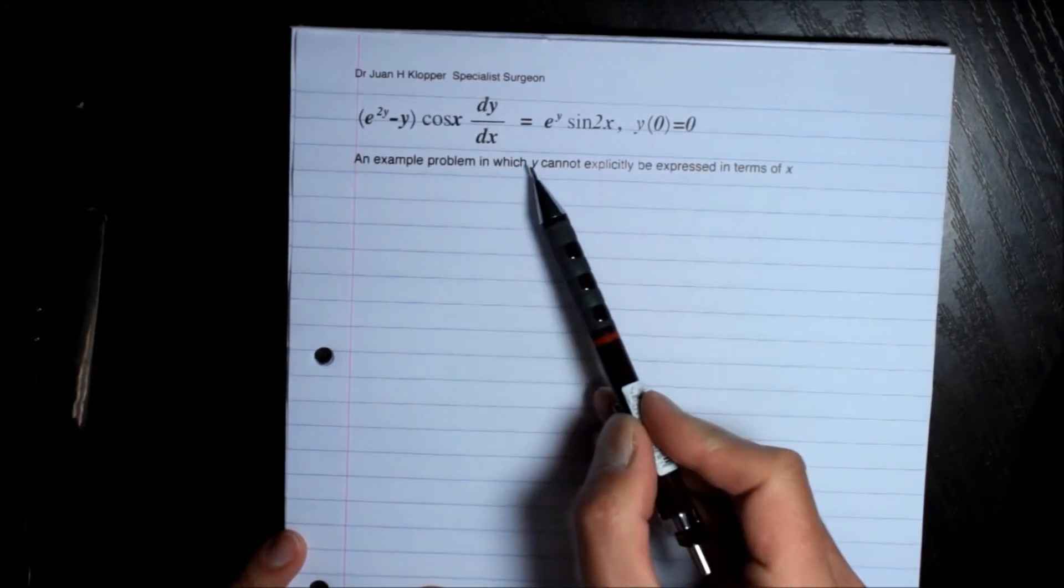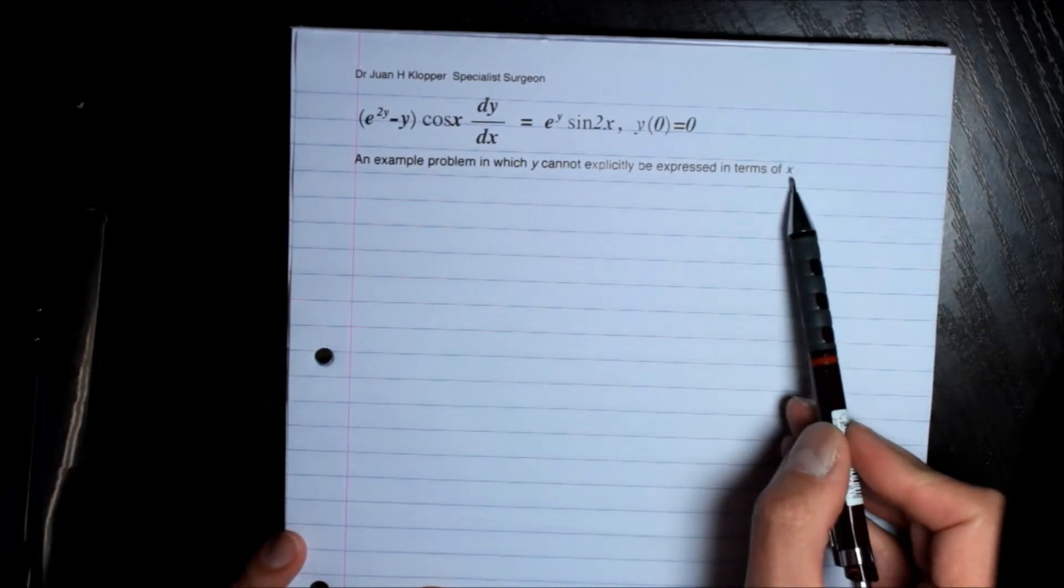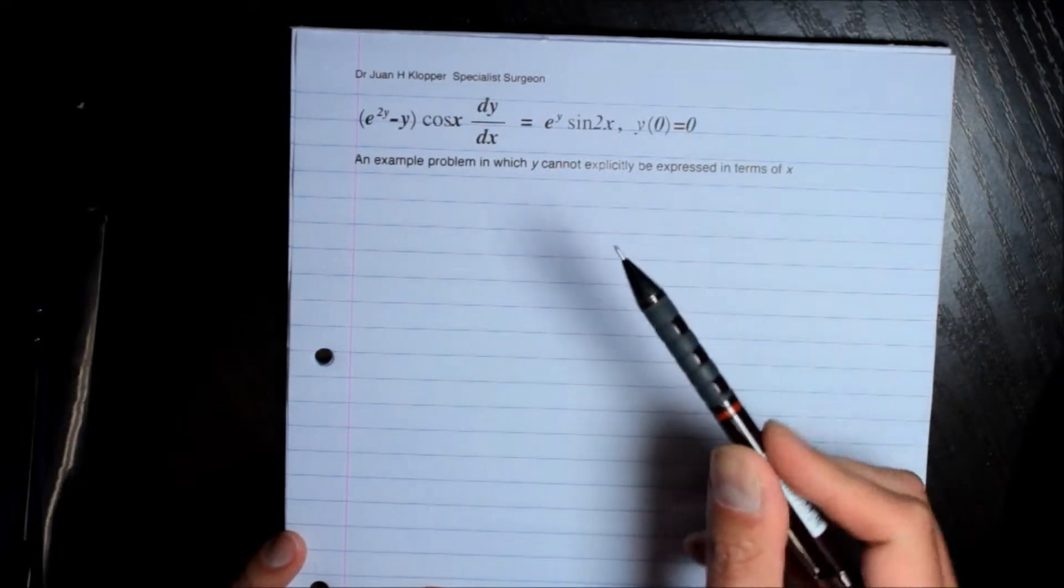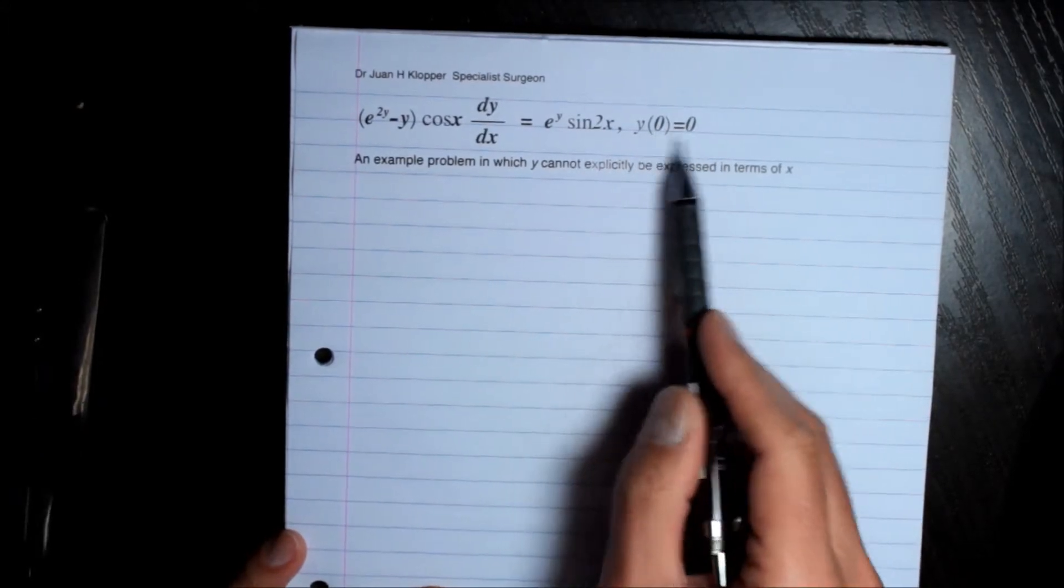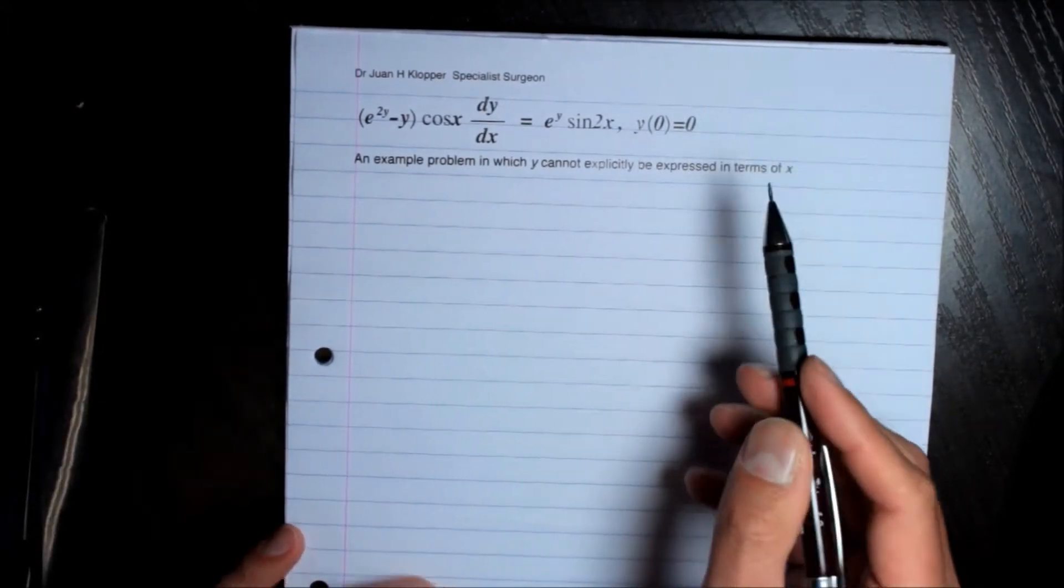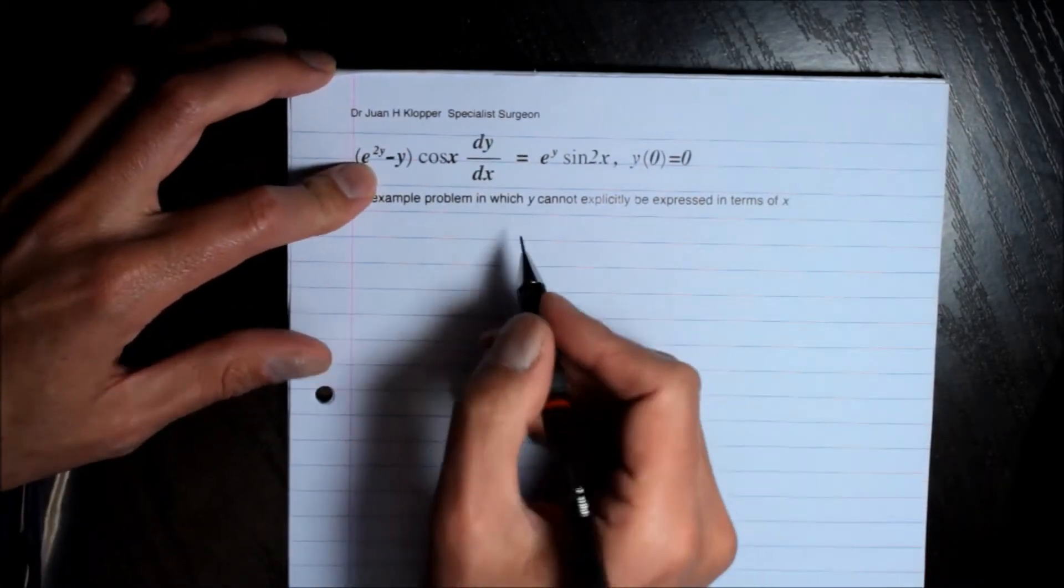This example problem is going to show us that we cannot always express y explicitly in terms of x as far as our solution set is concerned, our family of solutions, or in this instance perhaps a specific solution. Let's just begin by separating all our variables.